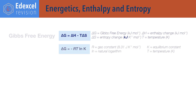Delta G equals minus RT ln K, where delta G is change in Gibbs free energy, R is the universal gas constant — 8.31 joules per kelvin per mole — T is temperature in kelvin, ln is natural logarithm, and K is an equilibrium constant.